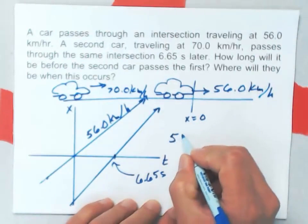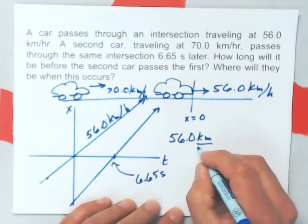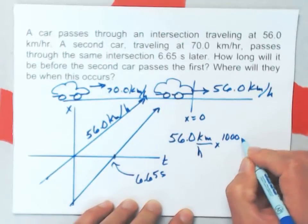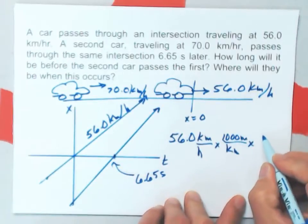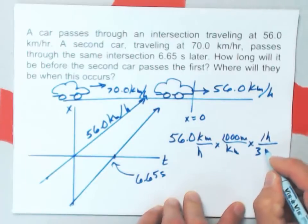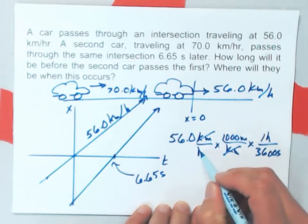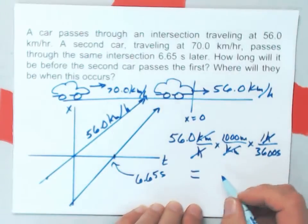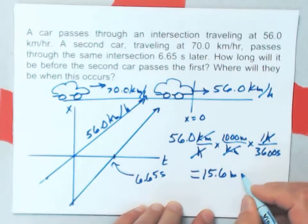And I'll show you the method for converting units correctly. We've done this in class a little bit. But 56 kilometers per hour times 1,000 meters per kilometer times one hour over 3600 seconds. You can see what will happen to the units that I don't want. The hours go away and I'll end up with meters per second. And 56 kilometers per hour happens to be 15.6 meters per second.